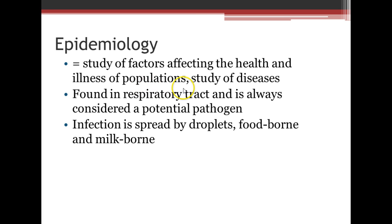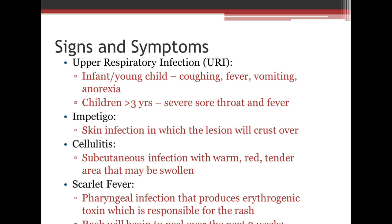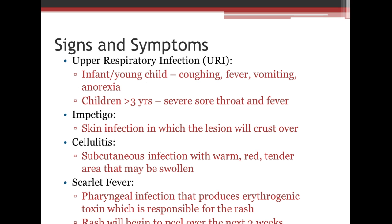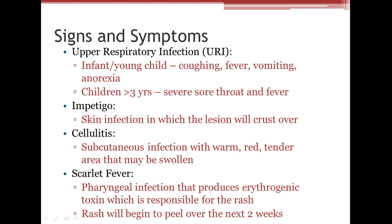Epidemiology refers to the study of factors affecting the health and illness of populations. Strep is found in the respiratory tract and is usually considered a pathogen. Infection is spread by droplets, foodborne, and milkborne routes. Signs and symptoms of a strep infection include upper respiratory infection. In a young child, this is usually coughing, fever, vomiting, or anorexia. In children over three, it presents as severe throat pain and fever. Young children may show fever and foul-smelling breath and sometimes vomiting before they're old enough to tell you their throat is sore.